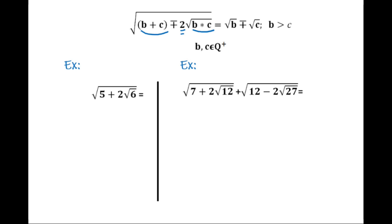If the number inside can be factored as b times c, and if b plus c equals the outer number, then the whole expression can be written as √b ± √c. If the sign between the roots is negative, the result is negative; if positive, the result is positive.